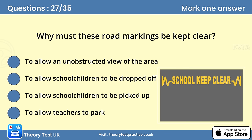Question 27. Why must these road markings be kept clear? The answer is A: To allow an unobstructed view of the area. Keeping the markings clear ensures that drivers, riders passing, and children crossing have a clear, unrestricted view of each other.